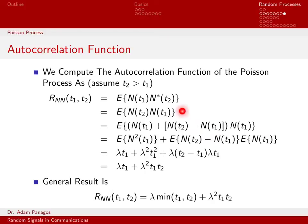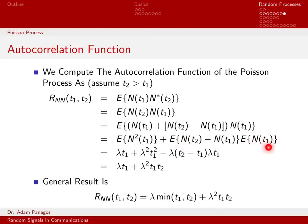Now let's multiply things out, distributing the expectation. x(t1) times x(t1) gives x²(t1), and x(t1) times the difference quantity gives a second term. Distributing the expectation, I get E[x²(t1)] plus E[x(t1) · (x(t2) - x(t1))]. Because x(t1) and x(t2) - x(t1) are independent due to the independent increments property, I can factor that second expectation into the product of two individual expectations: E[x²(t1)] plus E[x(t2) - x(t1)] · E[x(t1)].